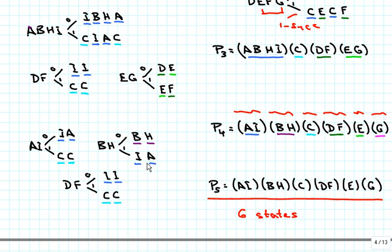We do one more step. For {A, I}, the 0-successors are I and A which are in the same block, and the 1-successors are both C, so no further partitioning is needed. For {B, H}, the 0-successors are in {B, H} and 1-successors are in {I, A}, both in the same block — no further subdivision. For {D, F}, 0-successors are both I and 1-successors are both C — no subdivision. Going from partition P4 to partition P5 we did not change anything, so the procedure stops.